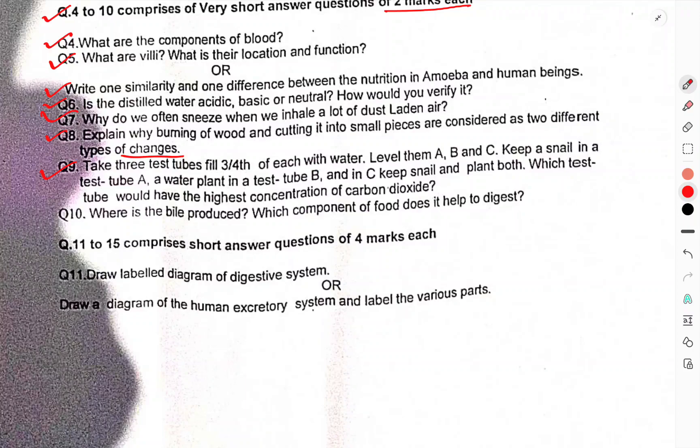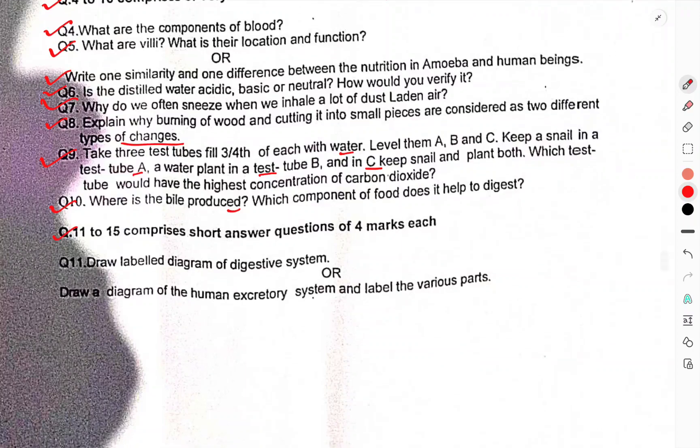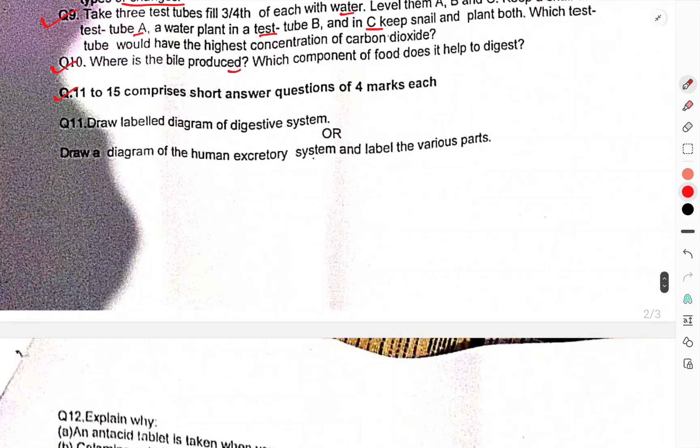Question 9: Take three test tubes of equal volume, fill with water - A, B, and C. Keep a snail in test tube A, a water plant in test tube B, and in C keep a snail and plant both. Which test tube would have the highest concentration of carbon dioxide? Question 10: Where is the bile produced? Which component of food does it help to digest?